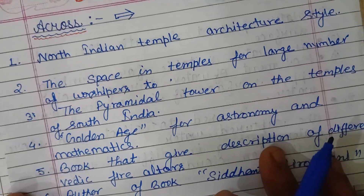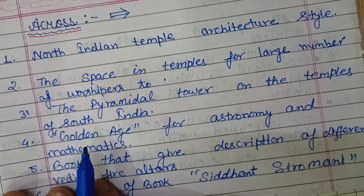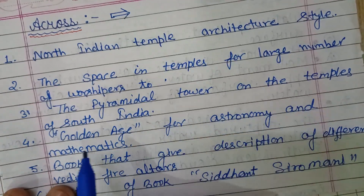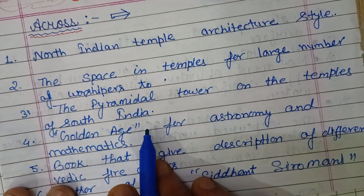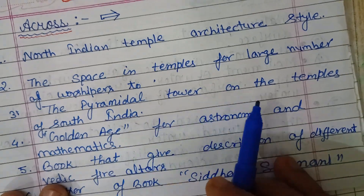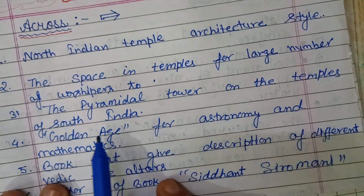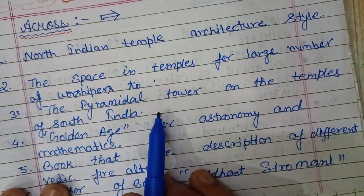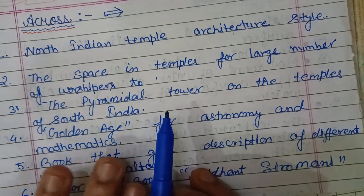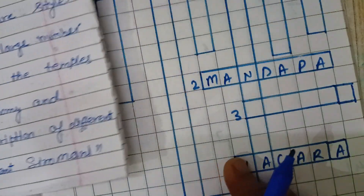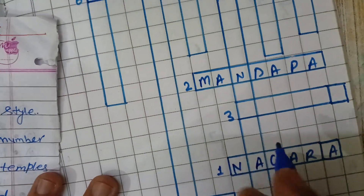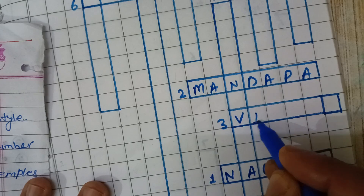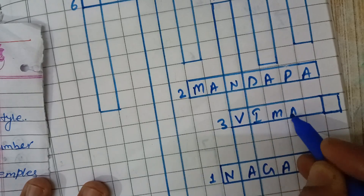Next, third question: The pyramidal tower on the temples of South India is known as Vimana. Third answer is Vimana.